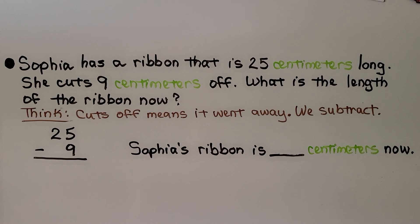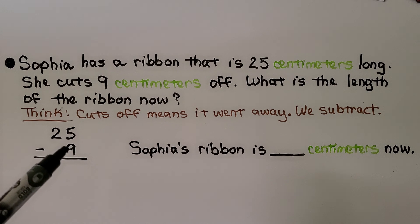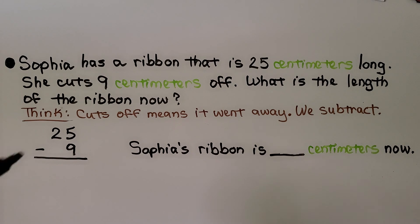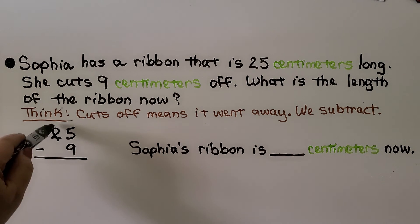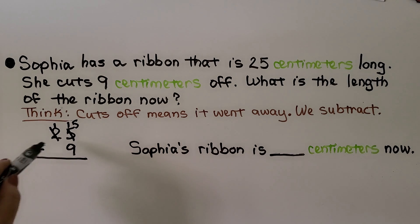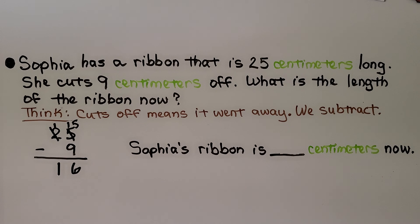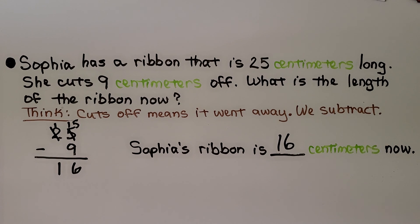Here's a word problem: Sophia has a ribbon that is 25 centimeters long. She cuts 9 centimeters off. What is the length of her ribbon now? Cutting off means it went away, so we subtract: 25 centimeters minus 9. In the ones place, we have 5 and need to take 9 away — we don't have enough, so we regroup. The 2 tens becomes 1 ten, and the 5 ones becomes 15 ones. Now 15 minus 9 is 6, and we have one 10. So Sophia's ribbon is 16 centimeters now.